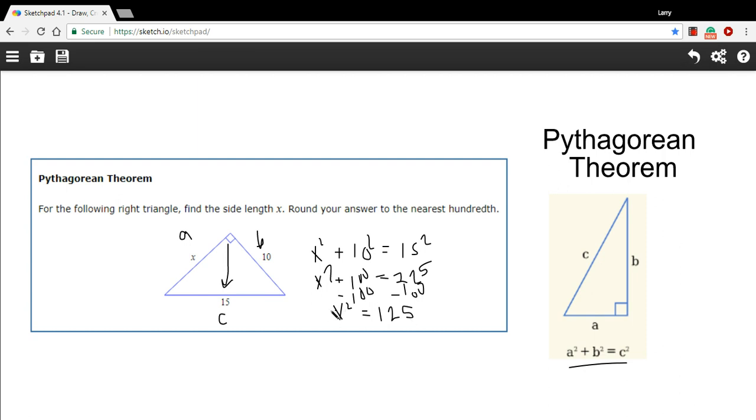At this point, to solve for X, we want to take the square root of both sides. So I've got X equals the square root of 125, and here they want us to round our answer to the nearest hundredth.